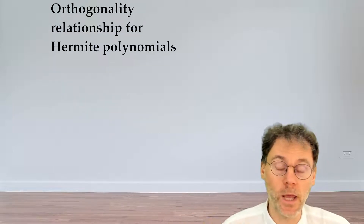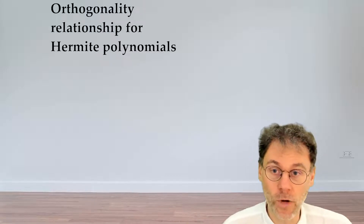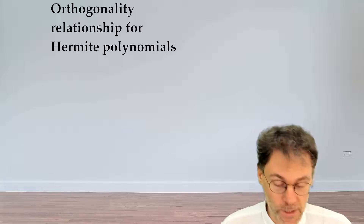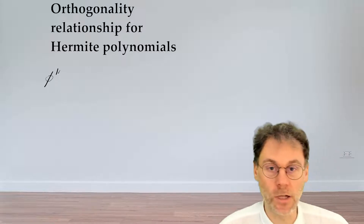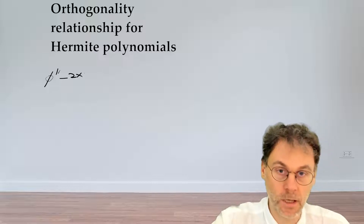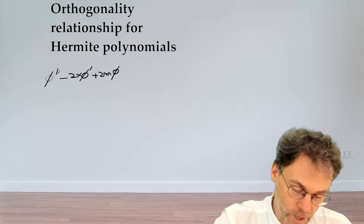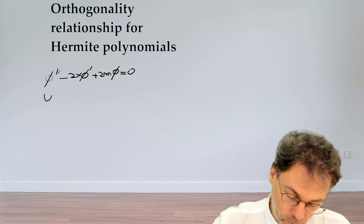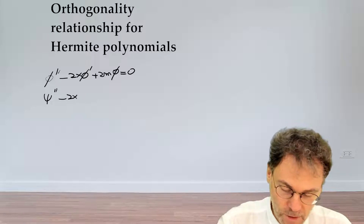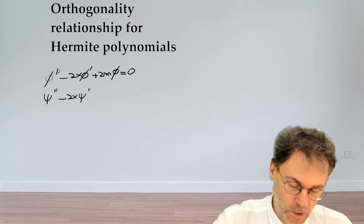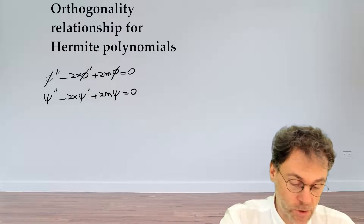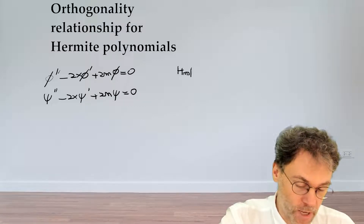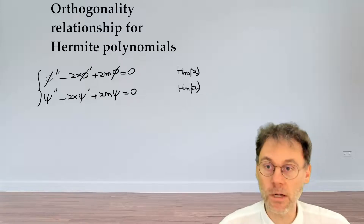We will be proceeding in a very similar way as we did with the Bessel functions — we're going to write down two slightly different variants of the Hermite differential equation. The first equation is: φ'' − x φ' + 2m φ = 0, and the second is the same but with ψ and n in place of φ and m. The solution to the first equation is the Hermite polynomial of order m, and for the second equation the Hermite polynomial of order n.